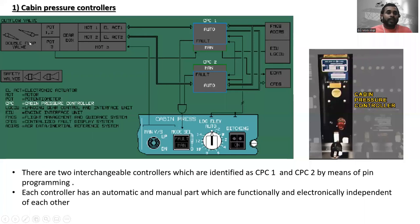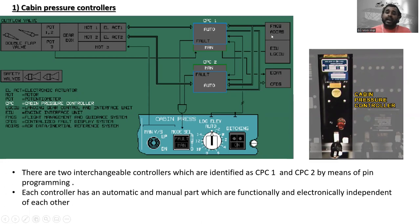Here you can see the pressurization system. Here is the cabin pressure controller one, cabin pressure controller two. This is the FMGS — Flight Management Guidance Computer. ADIRS means Air Data Inertial Reference System. Also shown are the EIU, LGCIU, and ECAM CFDS.